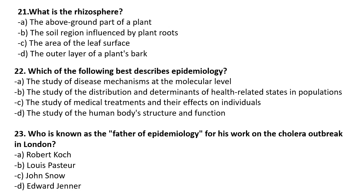What is the rhizosphere? This is from soil microbiology. The rhizosphere is the soil region influenced by plant roots — the soil near the plant roots. Which of the following best describes epidemiology? The correct answer is: the study of distribution and determinants of health-related states in populations. Who is known as the father of epidemiology for his work on the cholera outbreak in London? John Snow is the correct answer.